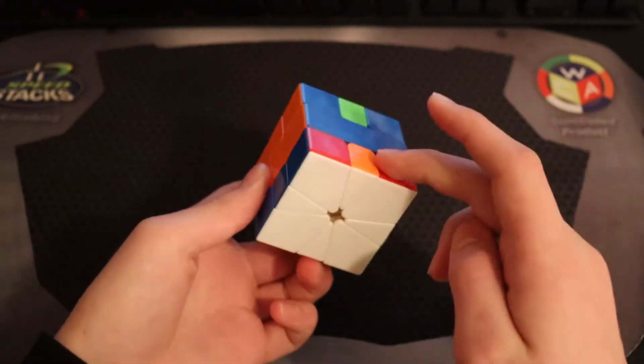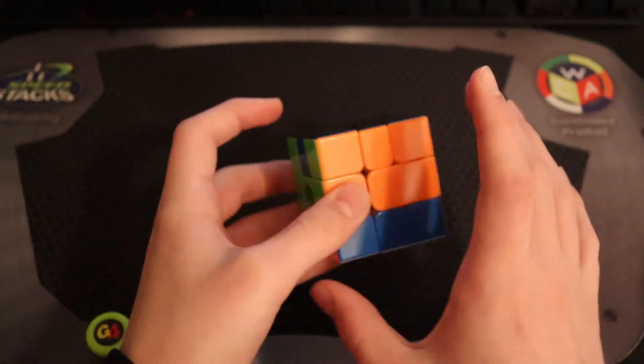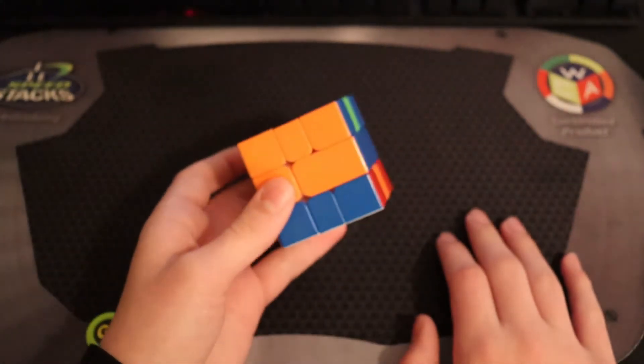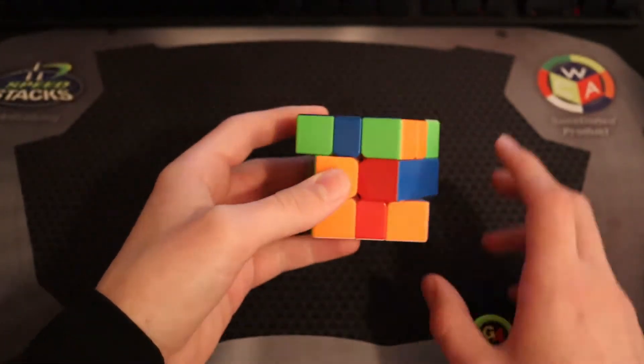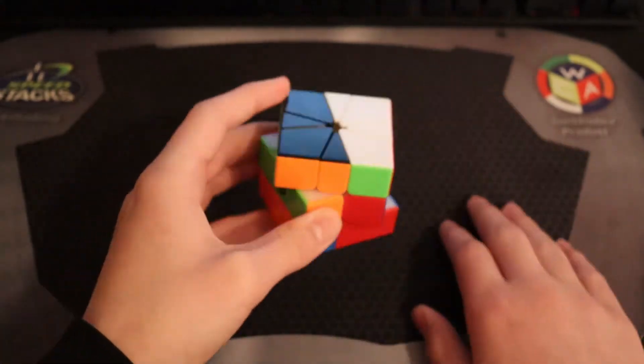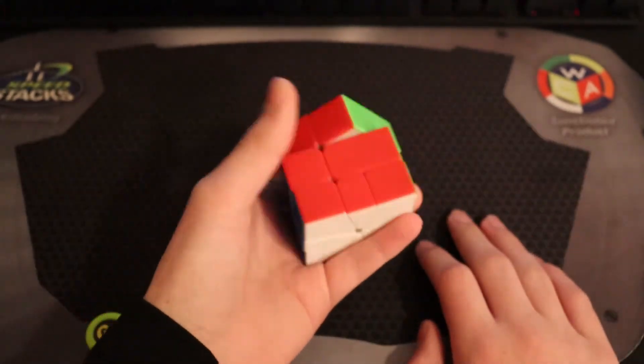So I have opposite on top, opposite on bottom. And to solve this, if they're both on the sides, I actually learned this trick from Tucker Chamberlain. So shout out to him. If you do one, move both layers, M2, move both layers back, slice, and then it's AUF.